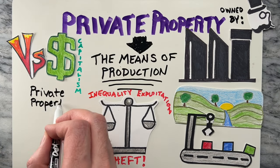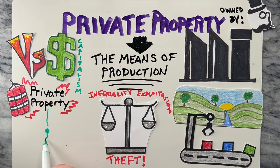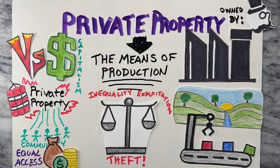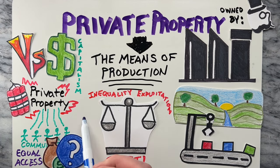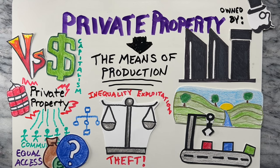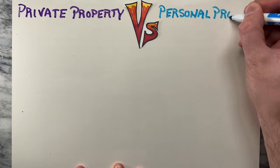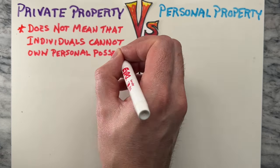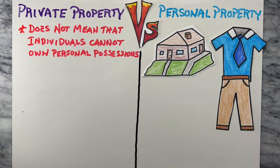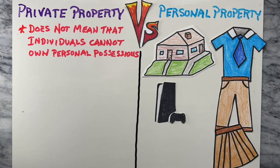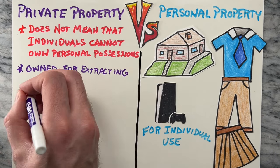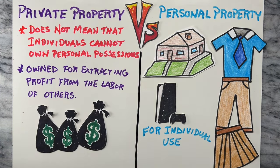In a communist system, private property is abolished and the means of production are owned and controlled by the community as a whole. This means that everyone has equal access to resources and wealth and that the community collectively decides how resources are allocated and how work is organized. However, it is important to note that the concept of private property within communism does not necessarily mean that individuals cannot own personal possessions. For example, individuals may still own their own homes, clothing, and personal items. The distinction is between personal property, which is owned for individual use, and private property, which is owned for the purpose of extracting profit from the labor of others.